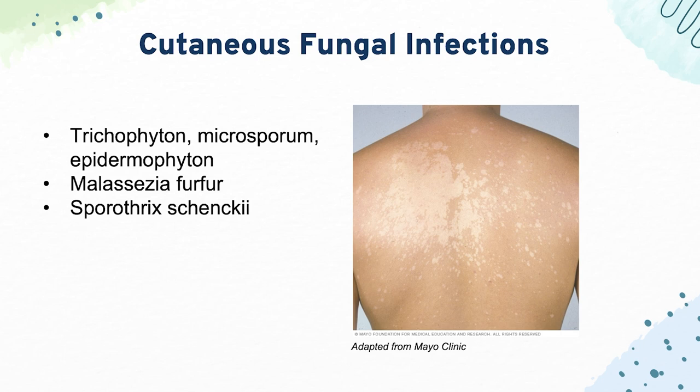Then we have Malassezia furfur, which causes hypopigmentation spots and on microscopy shows a spaghetti-and-meatballs appearance. The treatment is selenium sulfide. And then we have Sporothrix schenckii, which causes infections from rose thorns and typically ascends along the lymphatics — you'll see red streaks up the arms or legs, wherever the person was stuck by the thorn.